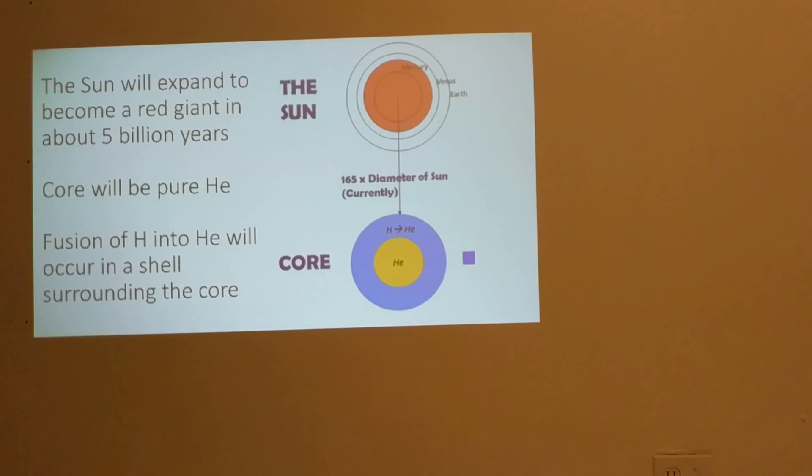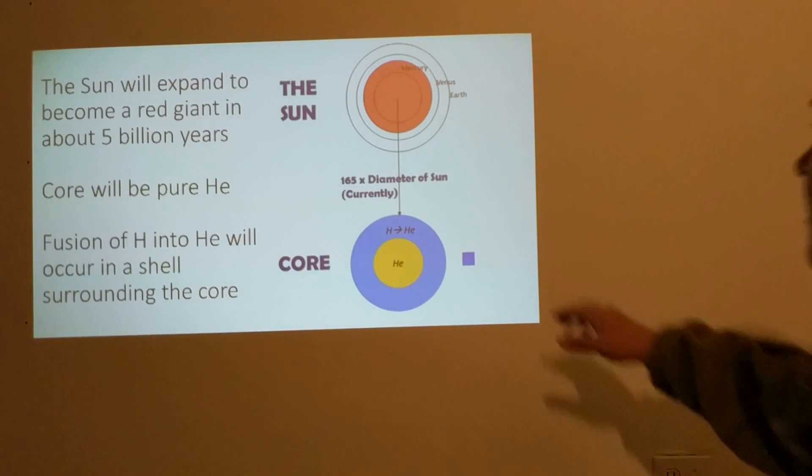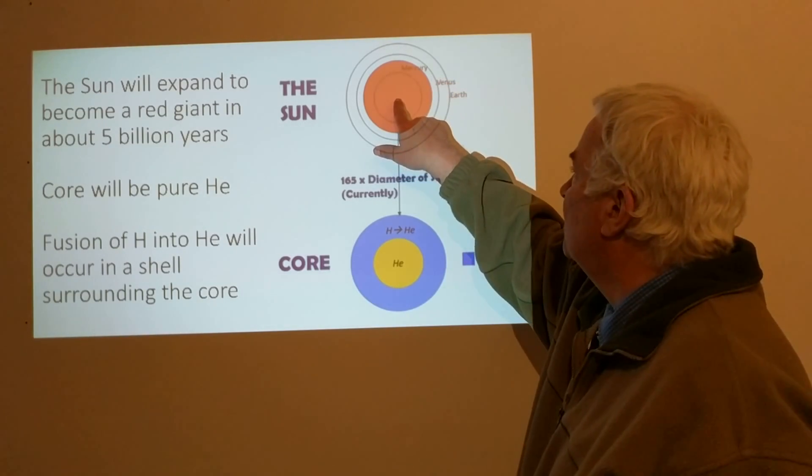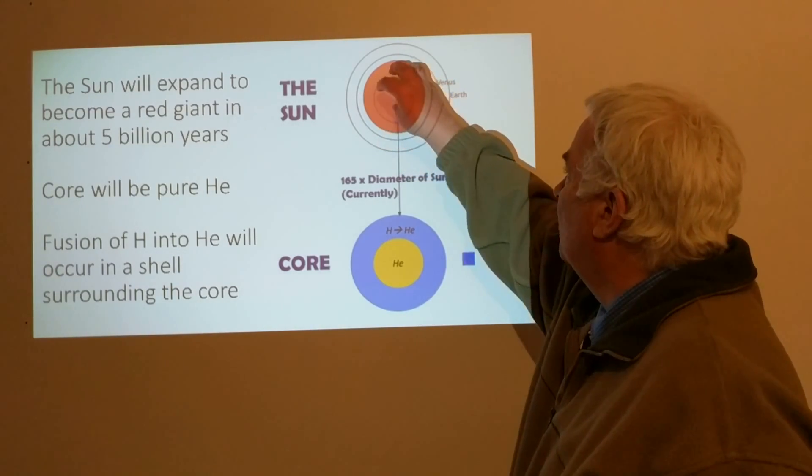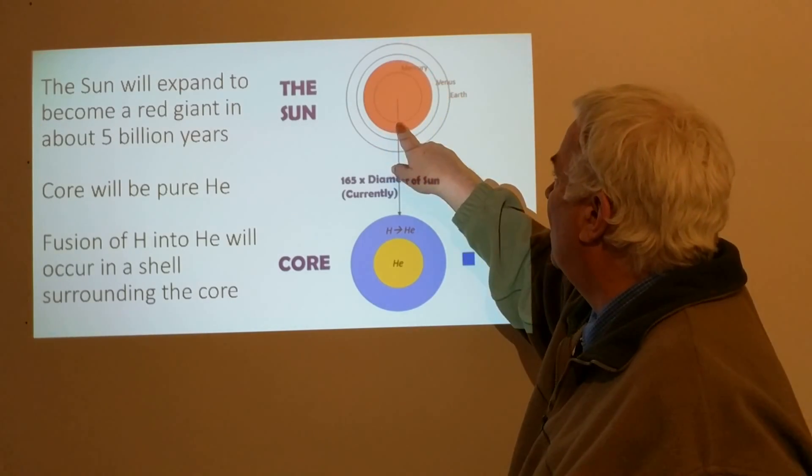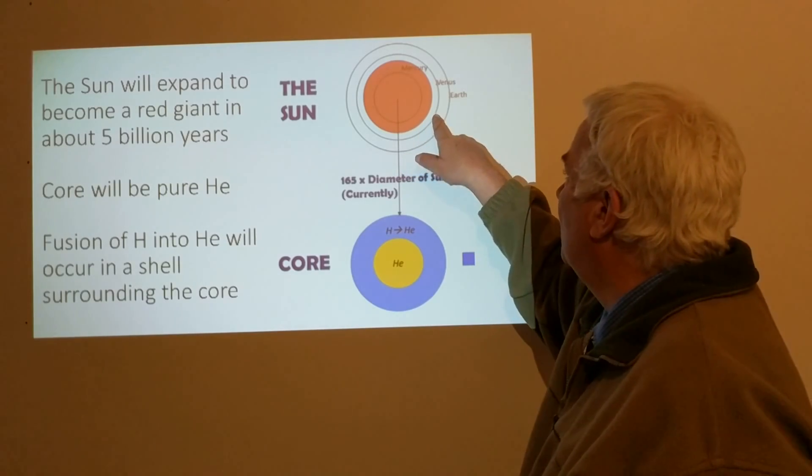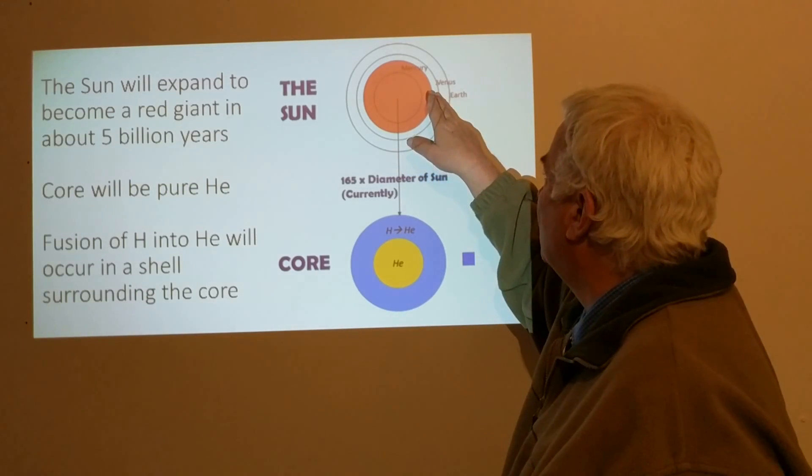The Sun will expand to become a red giant in about five billion years. The core will be pure helium. The fusion of hydrogen into helium will occur in a shell surrounding the core. This depicts the solar system with the Sun in the center, and it will expand out, filling much of the orbit of Mercury and almost out to the orbit of Venus.